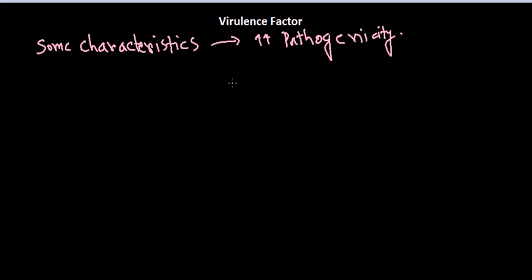So that is called a virulence factor. There are several different characteristics that can be found in different bacteria, viruses, and other organisms. In this video we'll be talking specifically about the virulence factors of bacteria. Now why do bacterial cells require pathogenicity — why do they need to bother? Because bacteria want to live in a host like us, they want food from us, and they are destroying us.